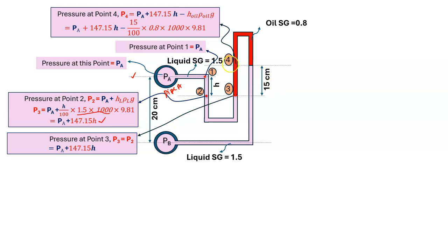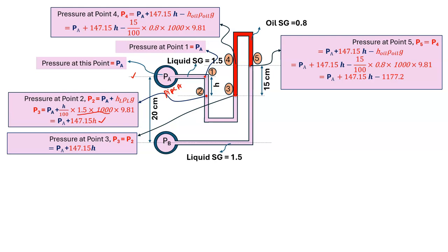Drawing a horizontal line, pressure is the same for the same fluid along the same horizontal level. So P5 equals P4, which is PA plus 147.15·H minus (15/100 × 0.8 × 1000 × 9.81). Plugging in all values, P5 equals PA plus 147.15·H minus 1177.2 Pascals.